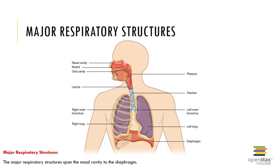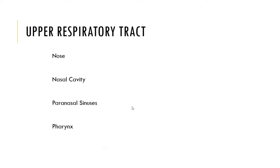The lower respiratory tract includes the larynx, the trachea (also known as the windpipe), the bronchi, the bronchioles, and the alveoli. The upper respiratory tract is sometimes abbreviated URT.